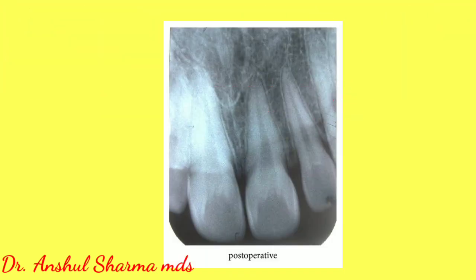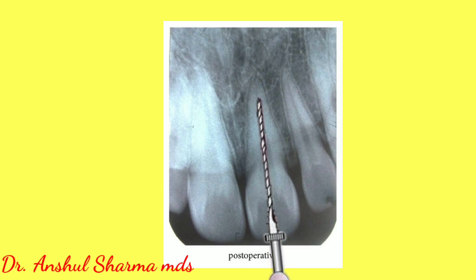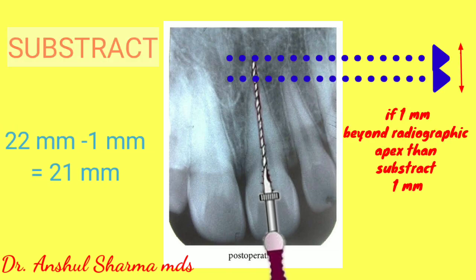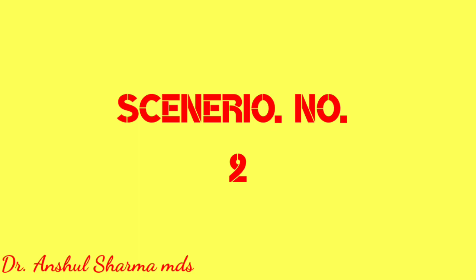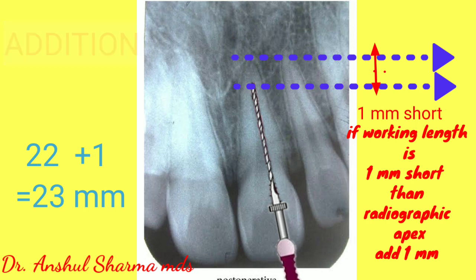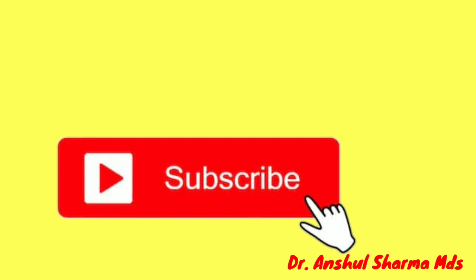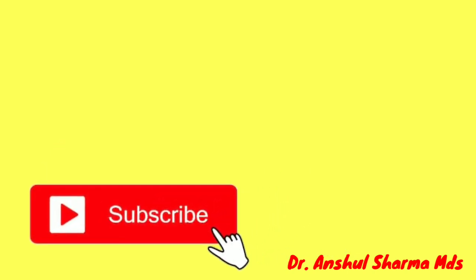Step five presents two scenarios. Scenario one: if the K file is exceeding 1 millimeter beyond the radiographic apex, subtract 1 millimeter from the current working length — 22 minus 1 equals 21 millimeters. Scenario two: if the apex of the K file is almost 1 millimeter short of the radiographic apex, add 1 millimeter to the present working length — 22 plus 1 equals 23 millimeters. In this way, you can feasibly and accurately estimate the working length of your tooth.